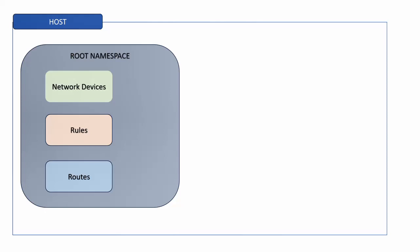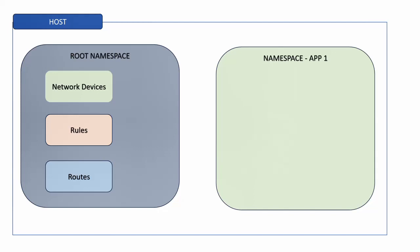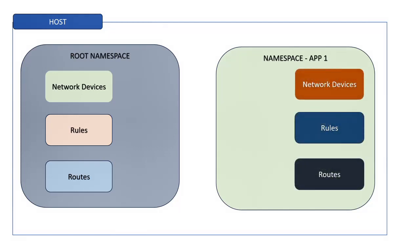Now, let us say we want to isolate an application using PID namespace and also give that application its own networking capabilities. For example, your application may not need to access the internet, maybe for security reasons, and you want to control that. So what you can do is run that application inside of a namespace and give that application its own networking resources, controlling the networking capabilities available for your containerized application. What I would like to do next is quickly go to our machine and show you what these three resources look like and what commands you can use on a Linux system to see these resources.